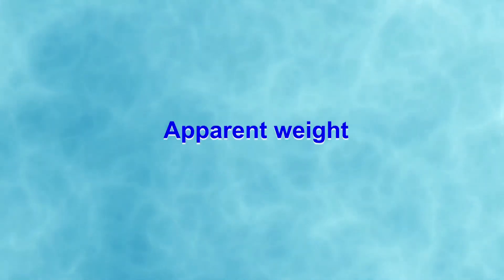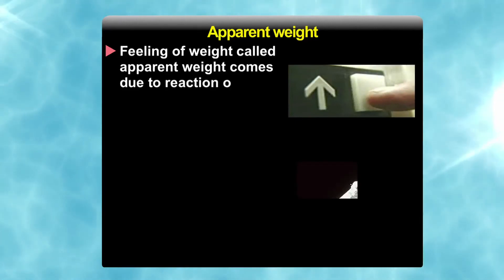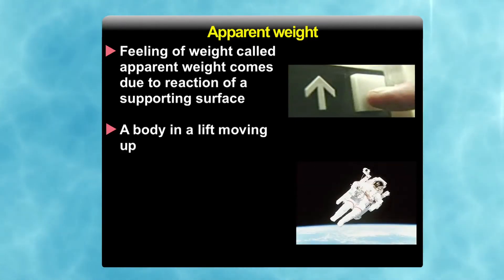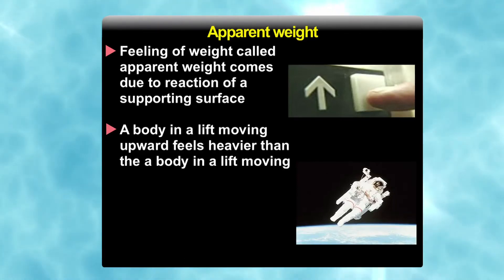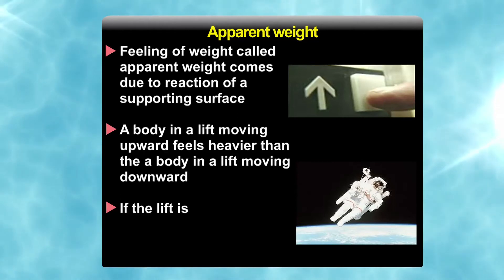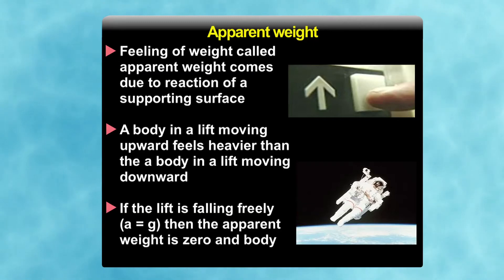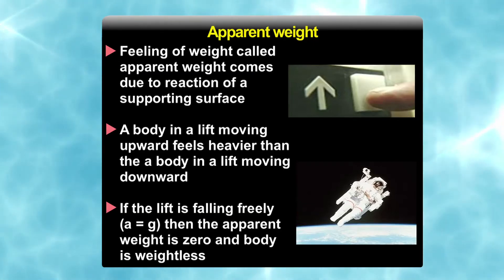Apparent weight is the feeling of weight that comes due to the reaction of a supporting surface. A body in a lift moving upwards feels heavier than one in a lift moving downward. If the lift is falling freely with acceleration equal to g, then the apparent weight is zero and the body is weightless.